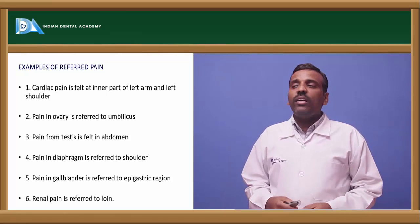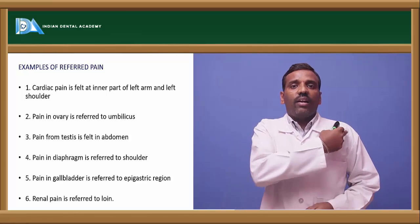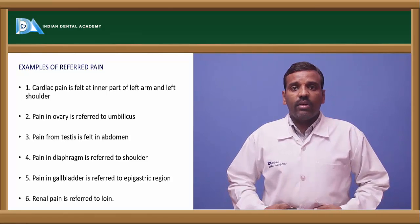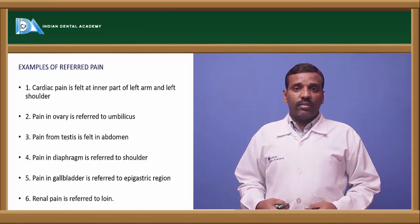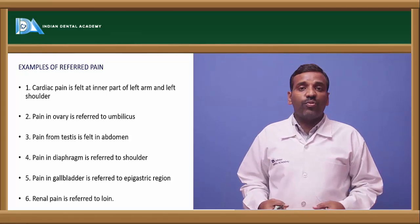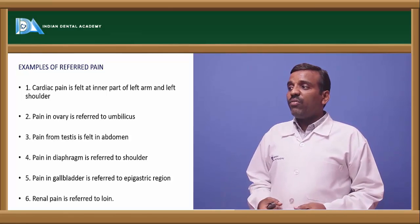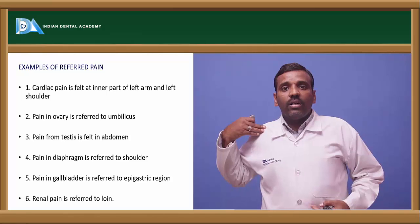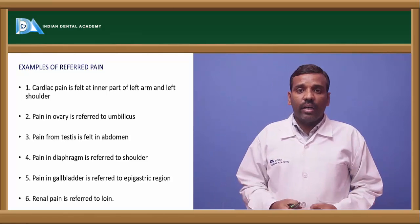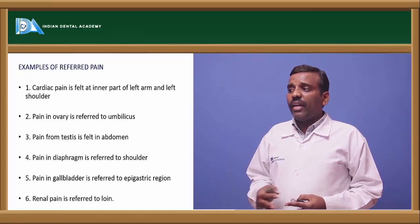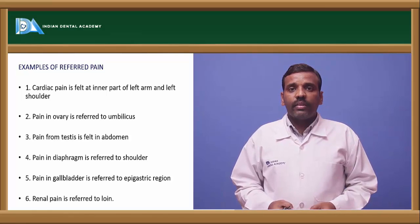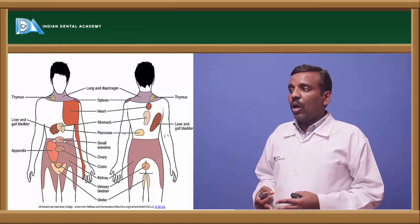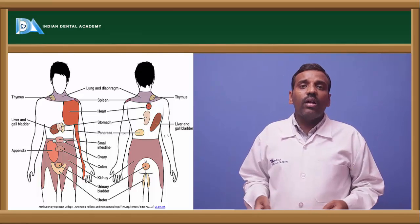Examples of referred pain: cardiac pain is felt in the inner part of the left arm; pain in the ovary in females is referred to the umbilicus; pain from the chest is felt in the abdomen; pain from the diaphragm is referred to the right shoulder; and renal pain is referred to the loin. The lungs, heart, diaphragm, gallbladder, kidneys, ovaries, and testes are the best examples of referred pain.